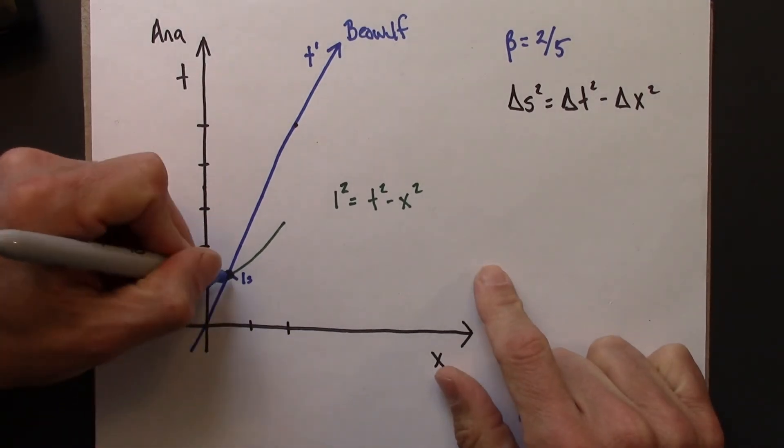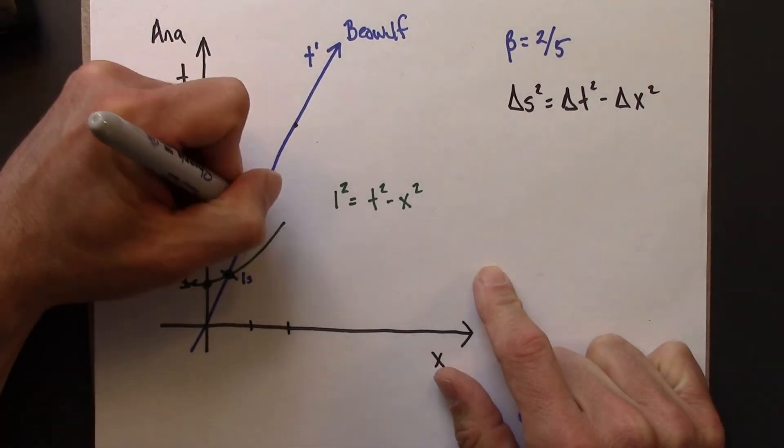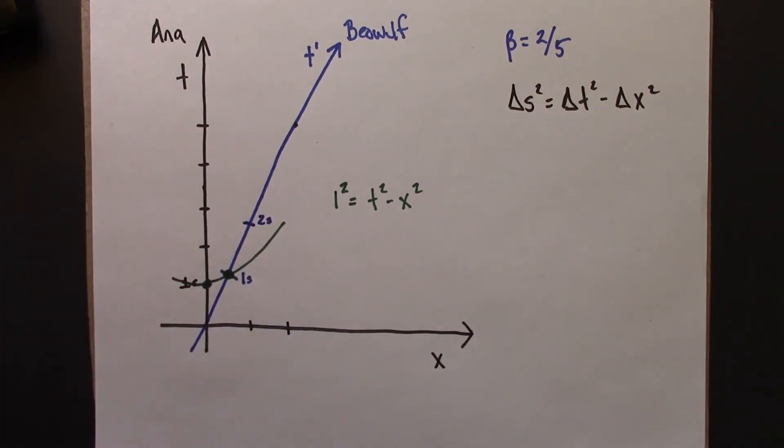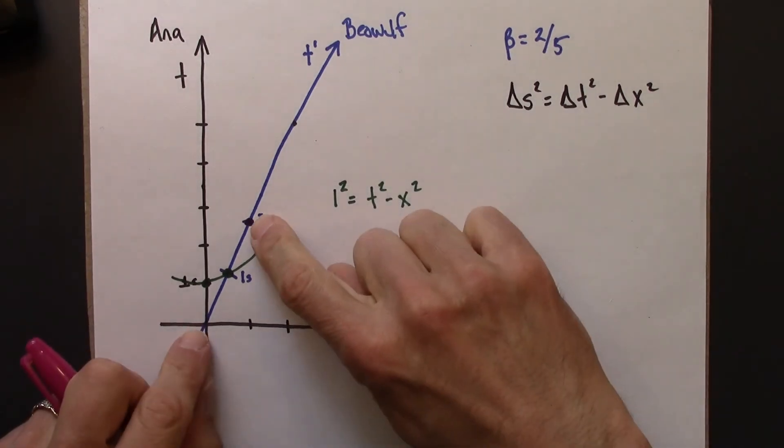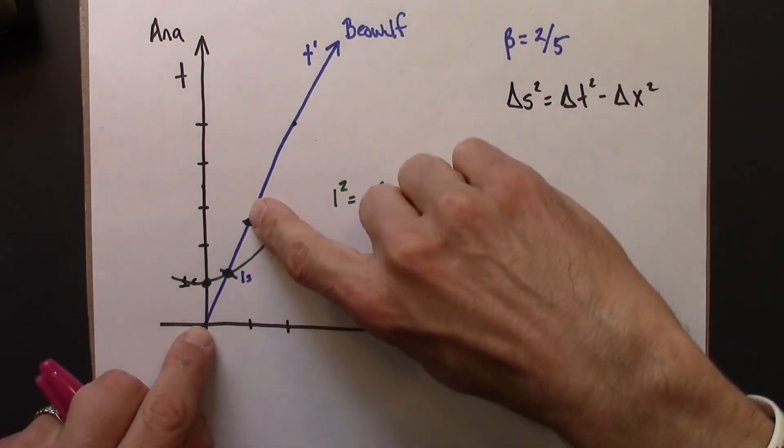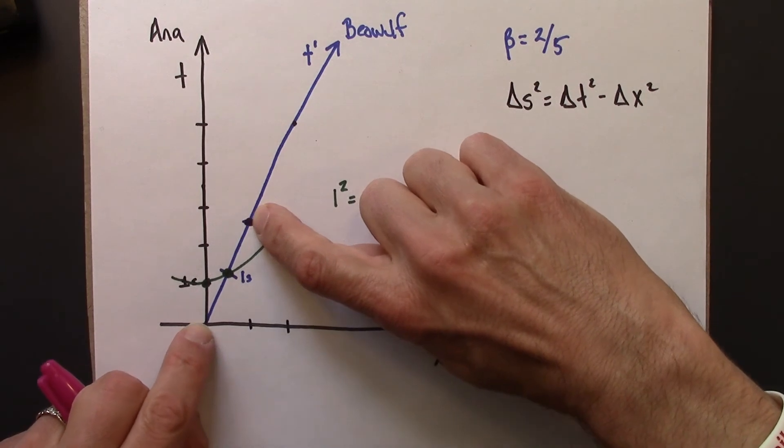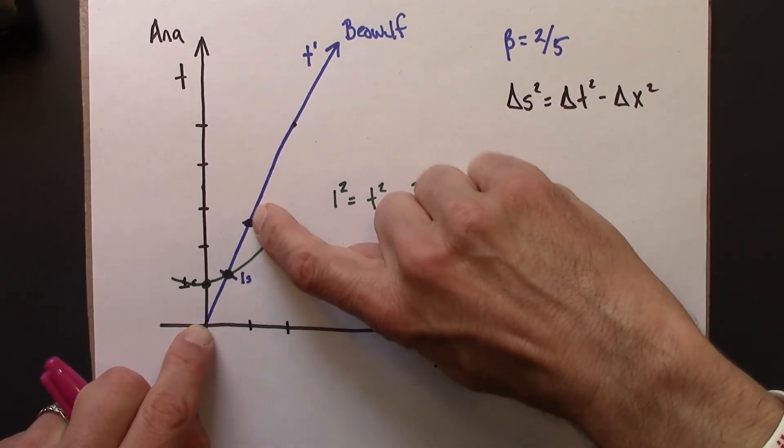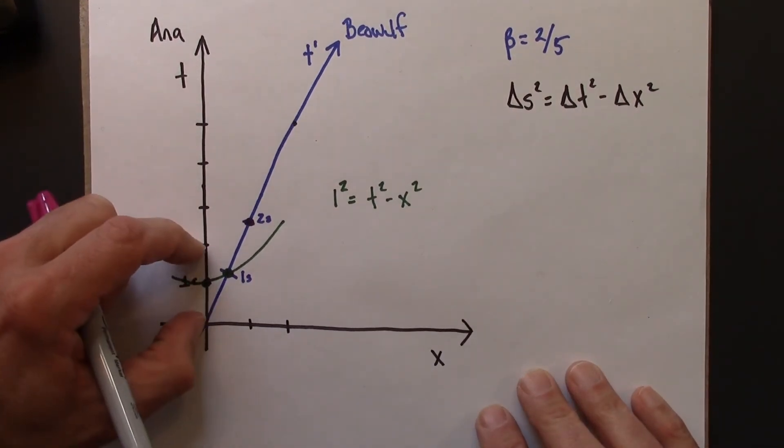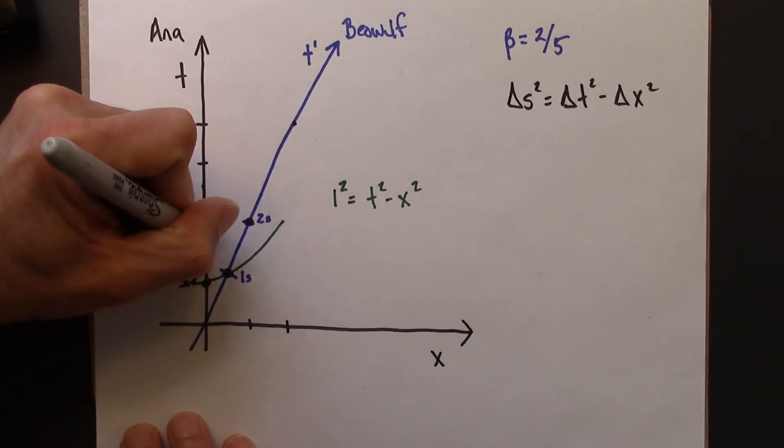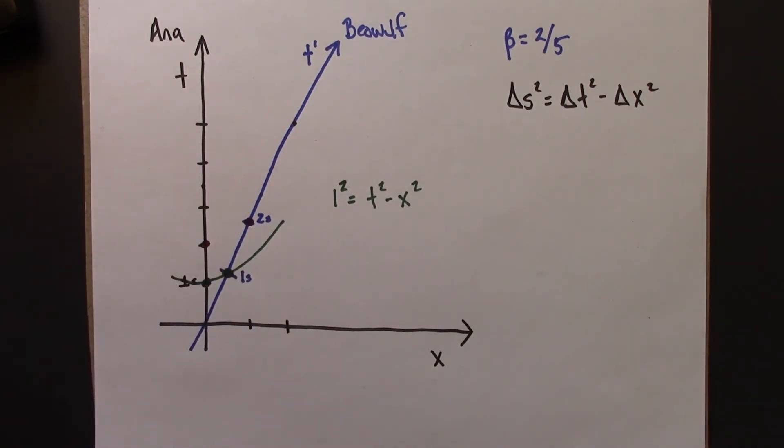And then we could do a similar thing. So 1 second, 2 seconds. So this event, Beowulf's clock strikes 2 seconds. That means that the space-time interval between the origin and this event is 2. Ana says, alright, well in my coordinate system, I know that this event, my 2 second mark at my home clock, has a space-time interval of 2.